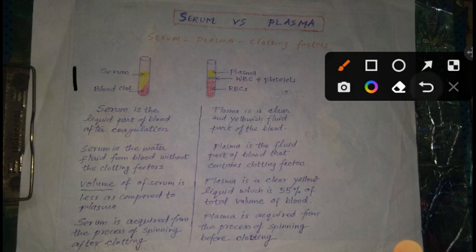Or second figure me aap dhekho. Yaha par kya ho raha hai second figure me — test tube me dikhai dhe ra hai, sabse niche RBCs hai. Uske oopar WBC aur platelets hai, sabse oopar plasma hai. Toh jab hain blood ke portions ko separate karte hai, toh sabse niche settle down ho jate hai RBC, uske oopar aa jate hai WBC aur platelets, or sabse oopar aa jata hai plasma, jo ki fluid part of the blood hota hai. Dhyan rakhye, is plasma ke andar clotting factors present hote hai.